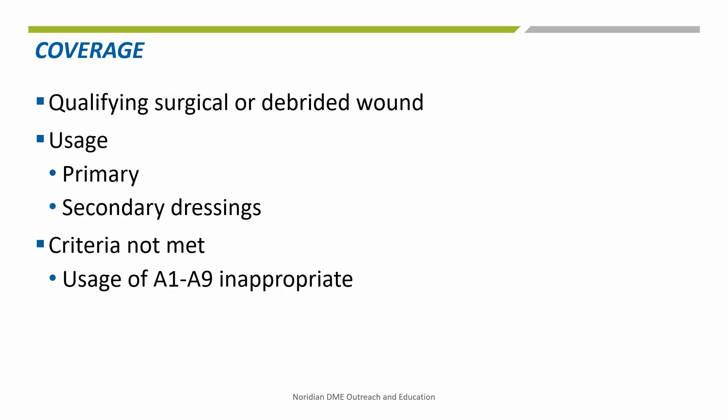Modifiers A1 through A9 have been established to indicate that a particular HCPCS code is being used as a primary or secondary dressing on a qualifying surgical or debrided wound. They are used to indicate the number of qualifying wounds on which a specific dressing HCPCS code is being used. If a dressing is not being used as a primary or secondary dressing on a surgical or debrided wound, the use of A1 through A9 modifiers would be inappropriate.